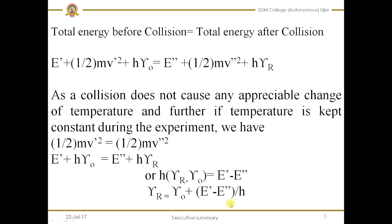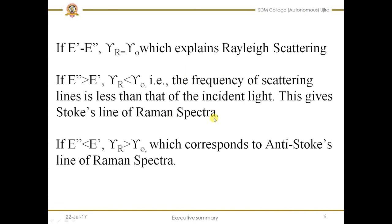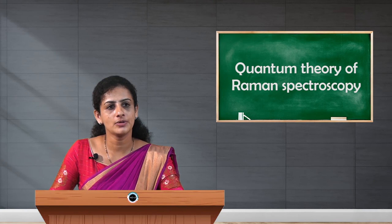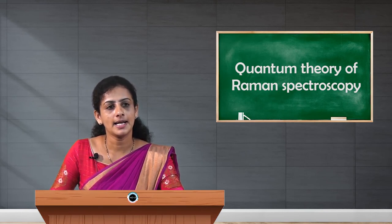Suppose E'' is greater than E' — the energy of the molecule after collision is more than before collision — then the term (E' − E'') becomes negative, so we subtract from ν₀ and get a lesser value for νR. That is the formation of a Stokes line. Then suppose E' is greater than E'' — this term becomes positive, so we add to ν₀ and get a higher value for νR, meaning the frequency of the scattered light is more — that is the formation of an Anti-Stokes line.